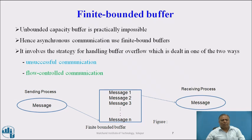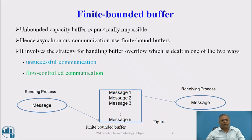Finite Bounded Buffer. Unbounded capacity buffer is practically impossible. Hence, asynchronous communication uses finite bounded buffers. It involves a strategy for handling buffer overflow, dealt with in one of two ways: Unsuccessful Communication and Flow Controlled Communication. Unsuccessful Communication means message transfer fails if there is no buffer space — the send returns an error message to the sending process, making message passing unreliable. Flow Controlled Communication means the sender is blocked until the receiver accepts some messages, creating space in the buffer — applicable not only for asynchronous but for all send primitives. This is the diagram of finite bounded buffer where the sending process sends a message copied into the message buffer, where multiple messages are stored, and then copied to the receiving process.